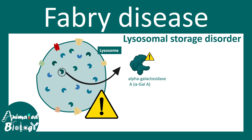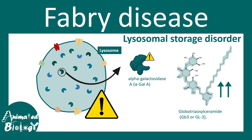This particular enzyme breaks down a lipid known as globotriacylceramide. When alpha-gal A is inactive or not produced due to a mutation in its gene, it leads to an accumulation of globotriacylceramide. This lipid accumulation in different regions of the body causes different problems in Fabry disease.